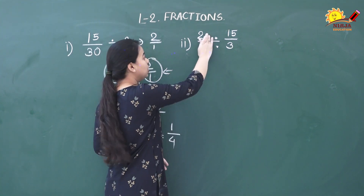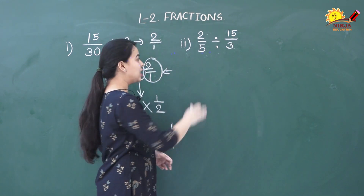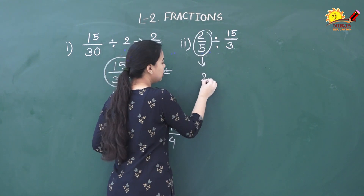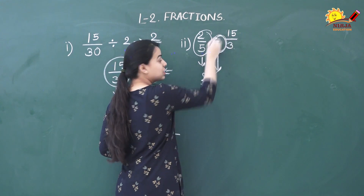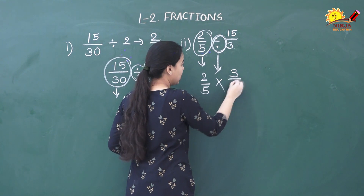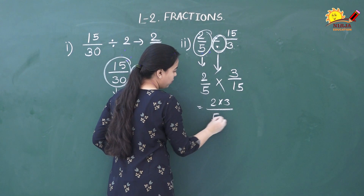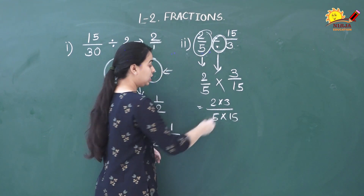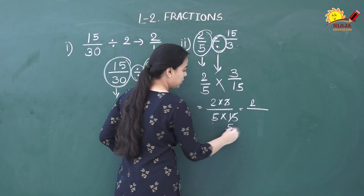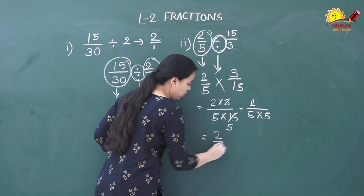Let us see another example: 2 by 5 divided by 15 upon 3. Both numbers are fractions. Put the first term as it is: 2 by 5. Change division to multiplication and write the reciprocal of 15 by 3, which is 3 upon 15. Now multiply: 2 × 3 on top and 5 × 15 on the bottom. We can simplify — 3 fives are 15 — leaving 2 upon 5, and 2 upon 5 multiplied by 5 equals 2 upon 25.